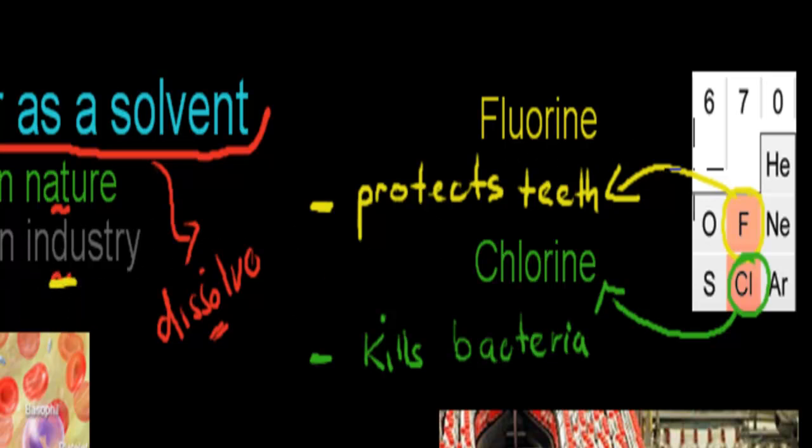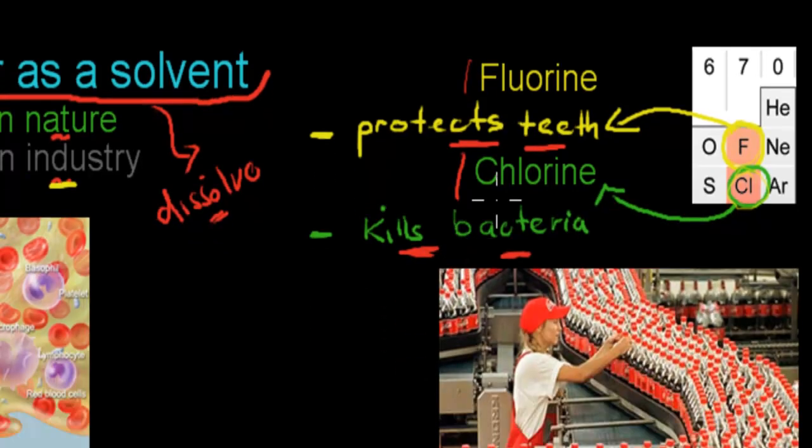So for example, fluorine, which is right here in the periodic table, and chlorine, these are added to water. Fluorine is added because it protects teeth, so it strengthens your teeth, fluorine does, and chlorine kills bacteria. So if we add those to water, they'll dissolve in water, and whenever we drink water, we'll make sure that it's clean, free of bacteria, and also healthy by strengthening our teeth. So these two are soluble in water, and thereby we can make sure that water becomes more healthy and safer to drink.